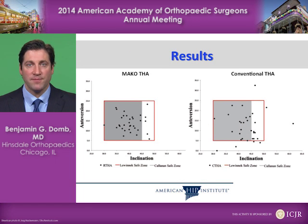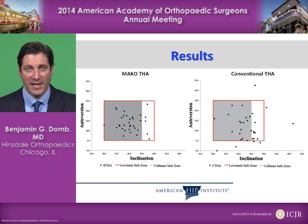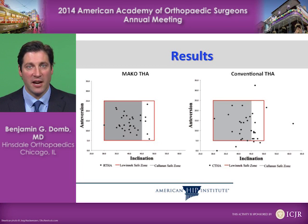Looking at the scatter plots, the red box represents Lewinik's safe zone and the gray shaded area represents Kalanand's safe zone. On the left are the robotic results and on the right are the freehand results. Using robotics, we have a much tighter cluster: all dots are within Lewinik's safe zone, whereas they are not for freehand. 85% are within Kalanand's safe zone for robotics.